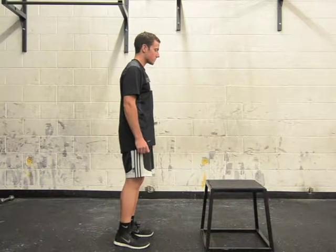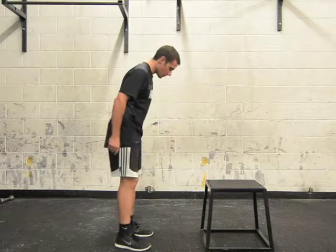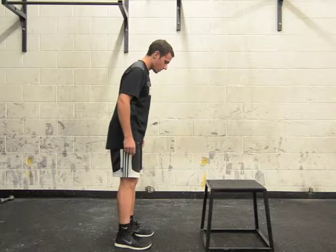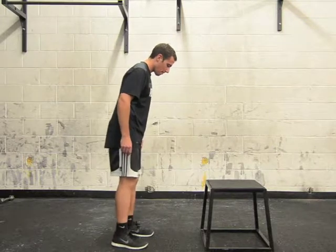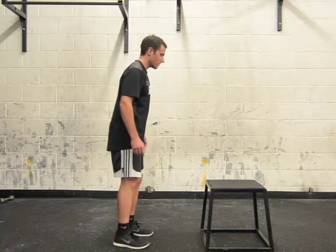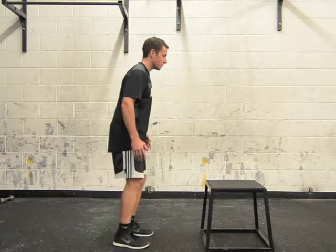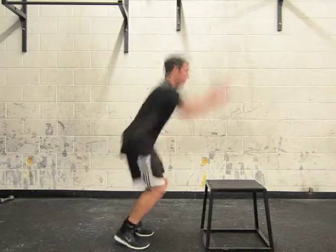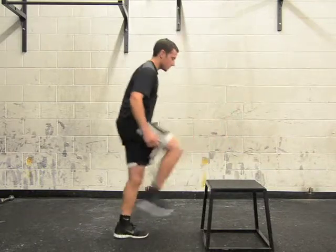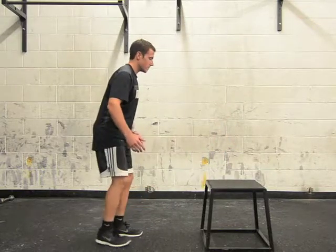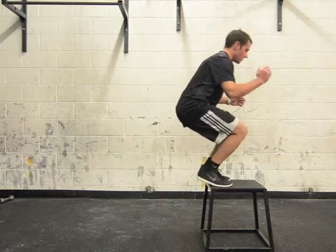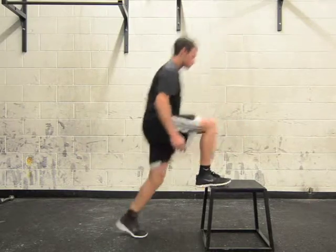Stand with your feet shoulder width apart at a comfortable distance from the box. When you're ready to jump, drop quickly into a quarter squat, then extend your hips, swing your arms, and push your feet through the floor to propel yourself onto the box.